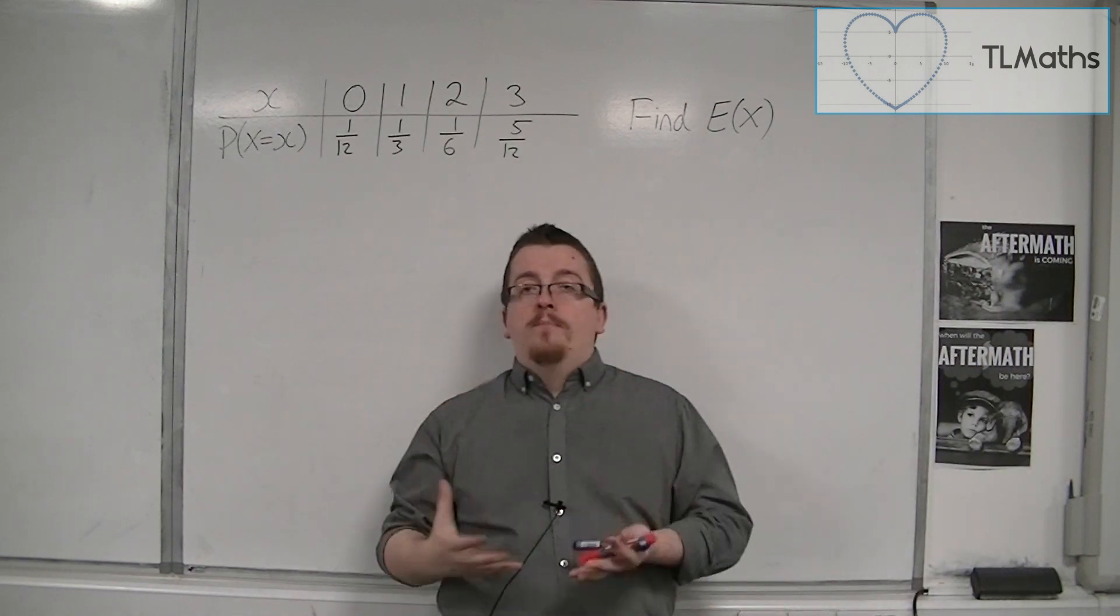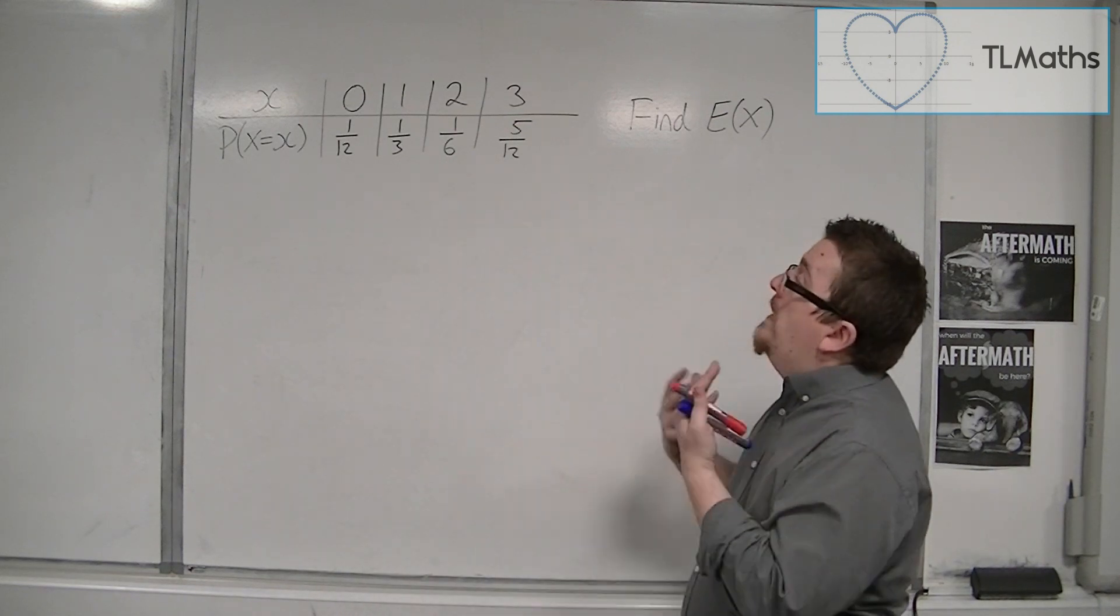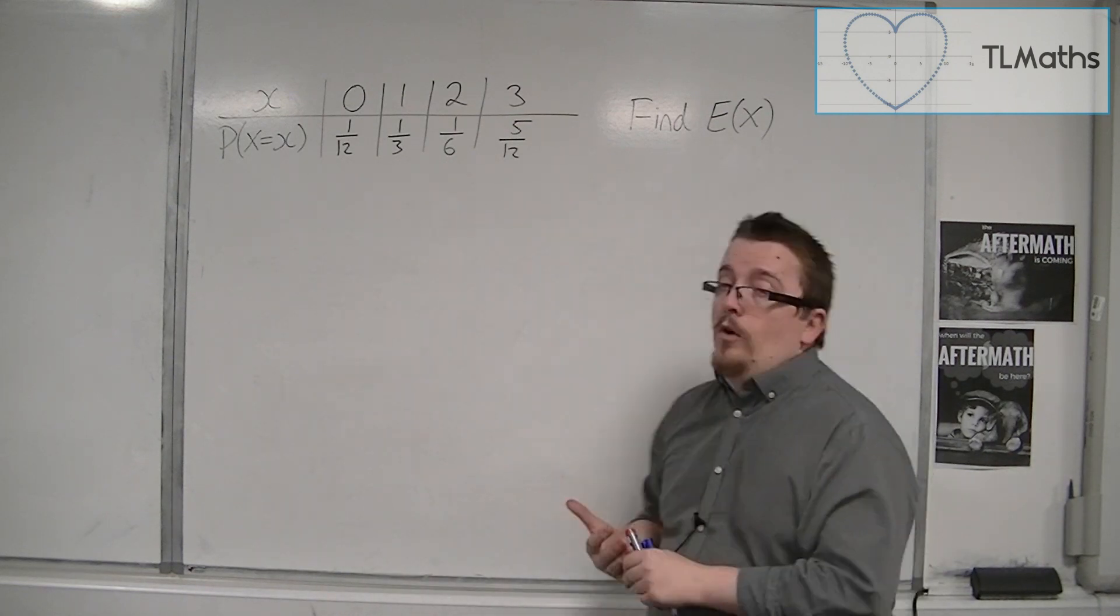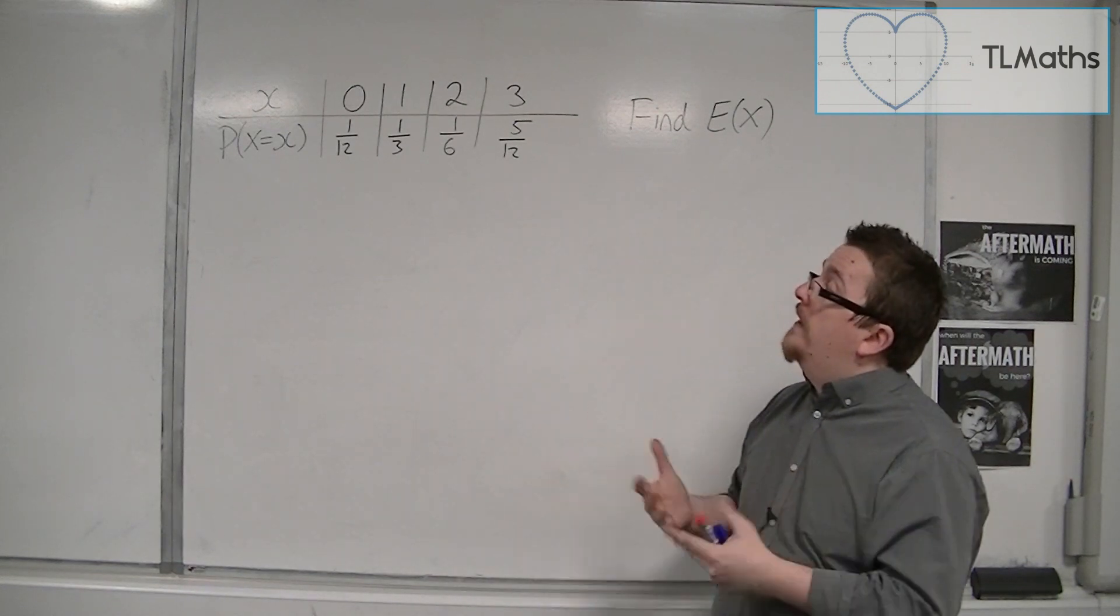So over a long period of time, I might get an average value of, say, 1.1 or 2.1 or something like that.